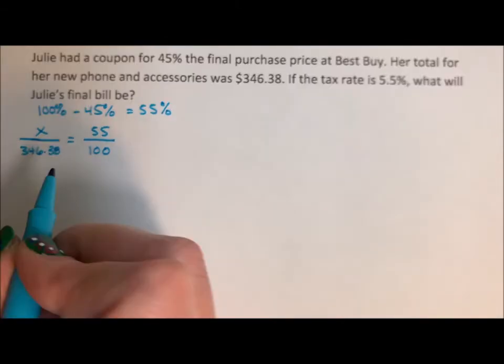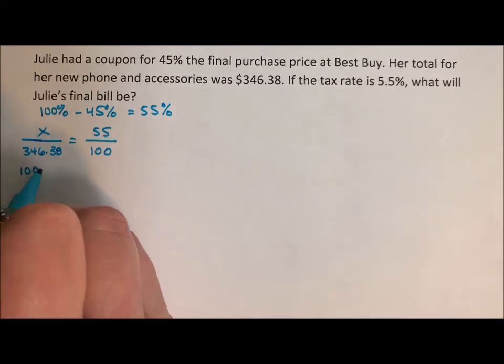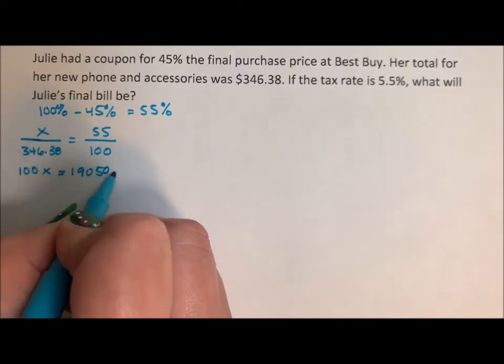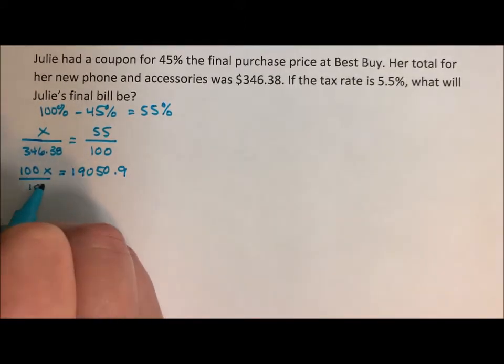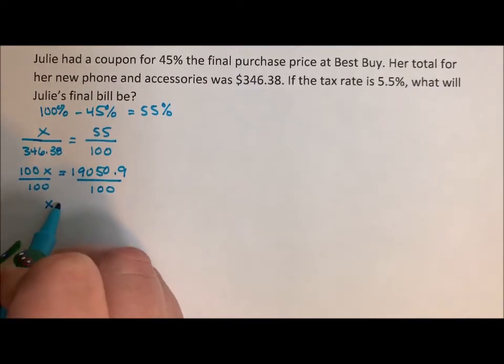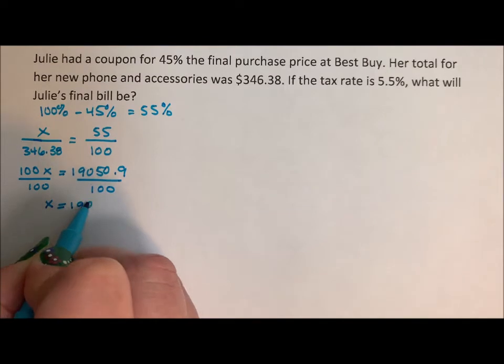So we are going to cross multiply. So 100x is equal to 19,050.9. We divide by 100 and x is equal to 190.509.